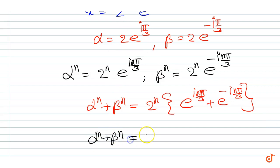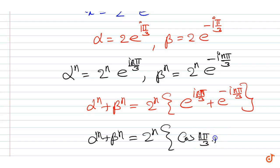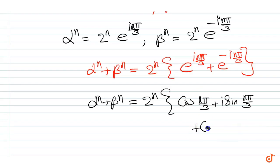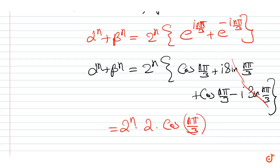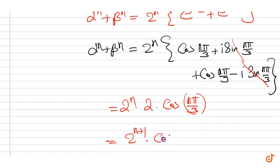That is, alpha to the power n plus beta to the power n equals 2ⁿ · (cos(nπ/3) + i·sin(nπ/3) + cos(nπ/3) - i·sin(nπ/3)). The sine terms cancel, giving 2ⁿ · 2·cos(nπ/3), which equals 2^(n+1) · cos(nπ/3). That is our proof.